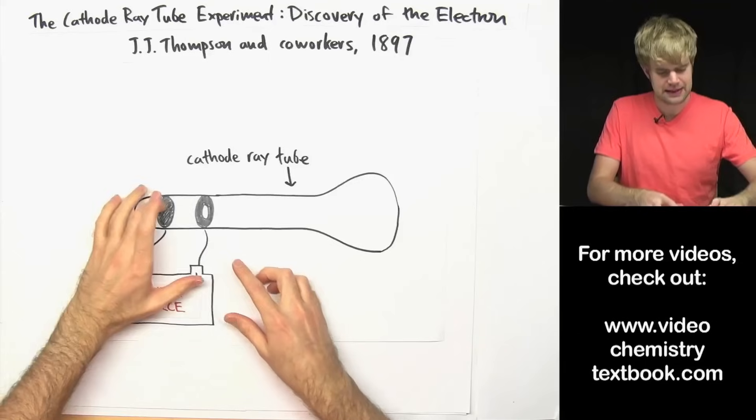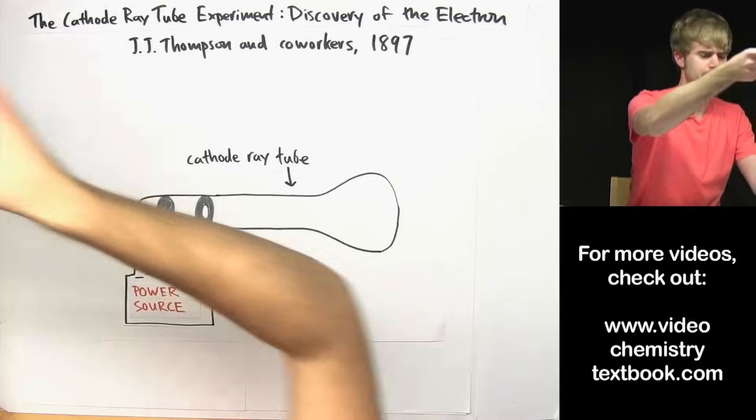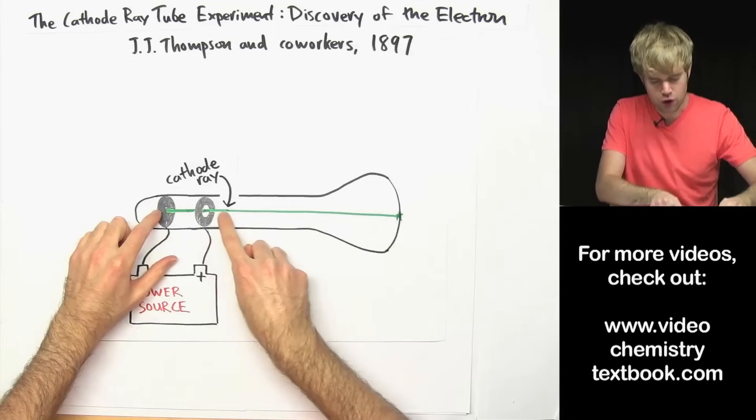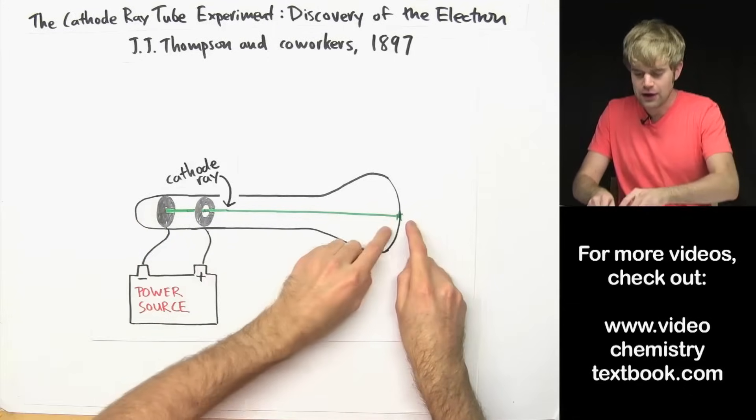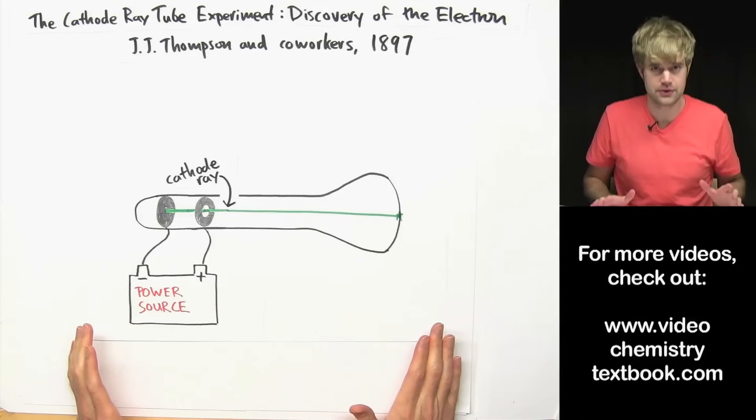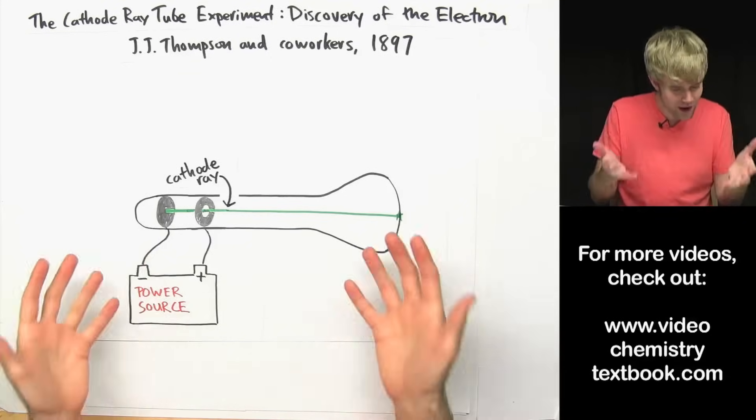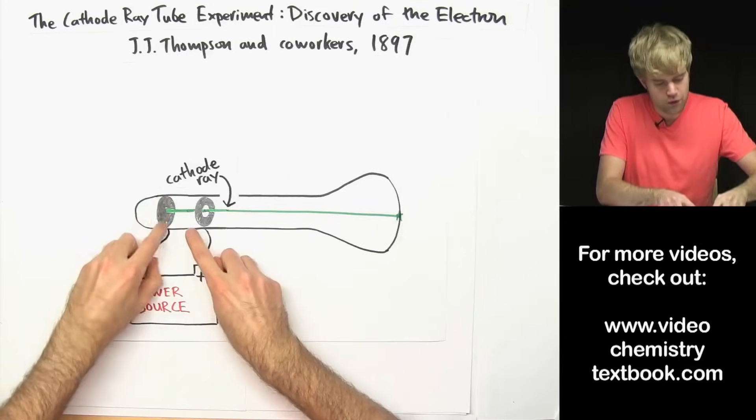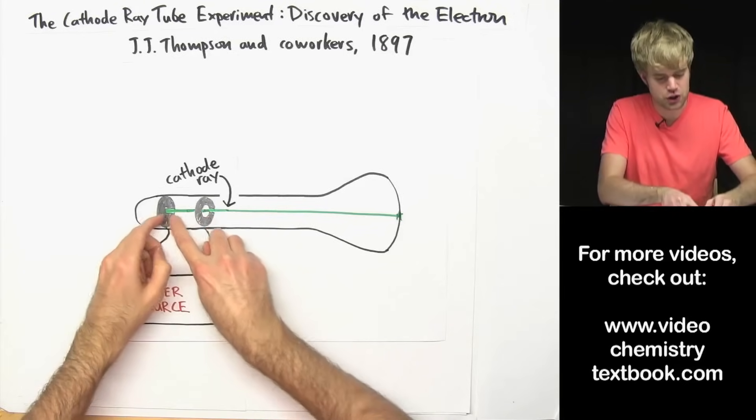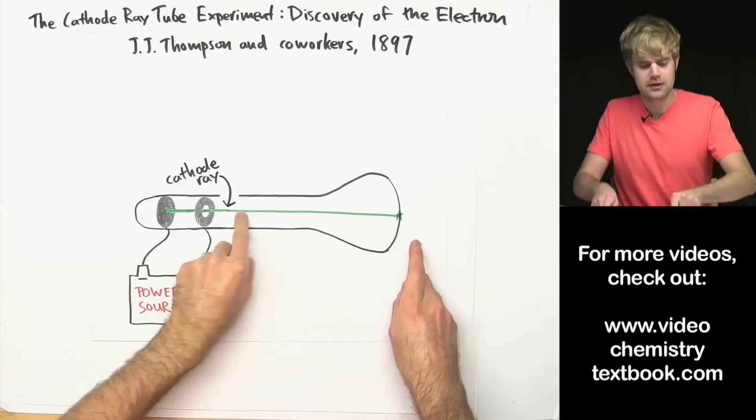So Thompson connected these two pieces of metal to a power source and here's what happened. A ray shot from this piece of metal across the tube and created a glowing spot over here when it hit a special coating on the inside of the glass. Now Thompson didn't know what was going on but what really was going on is that electrons from this piece of metal were shooting out. They were attracted to this piece of metal which has an opposite charge but they were moving so fast that they shot all the way across the length of the tube.